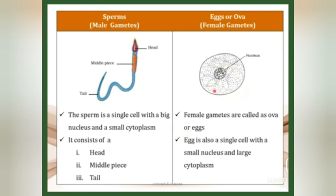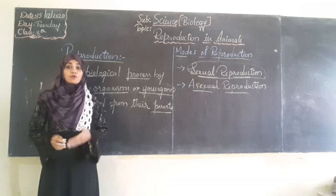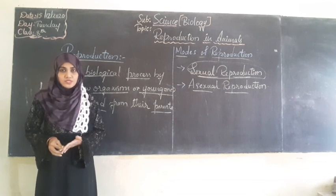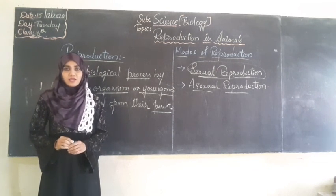The female gametes are called ova or eggs. The ovum is a single cell and it contains a small nucleus with a large cytoplasm. That was all about today's class. The further content will be about the fertilization process, which we will discuss in the next class. Thank you.